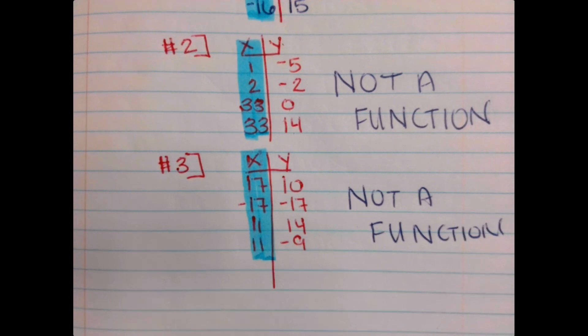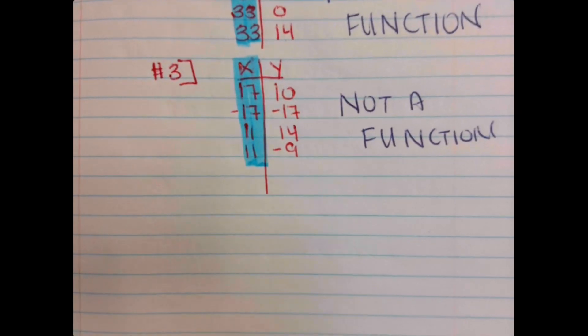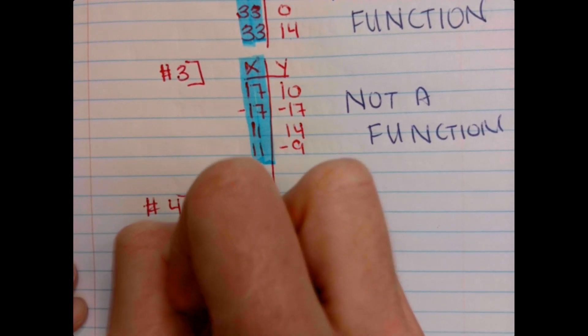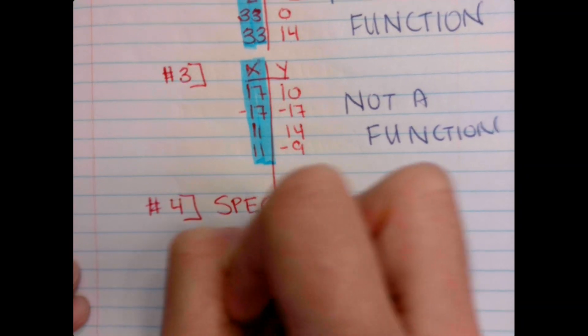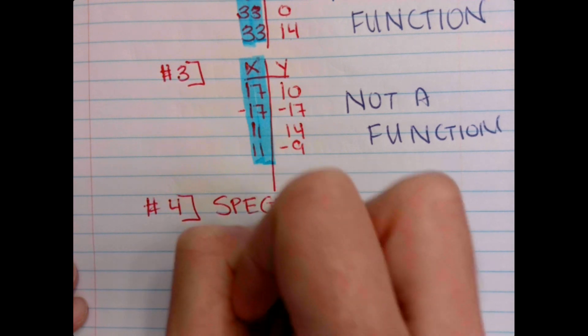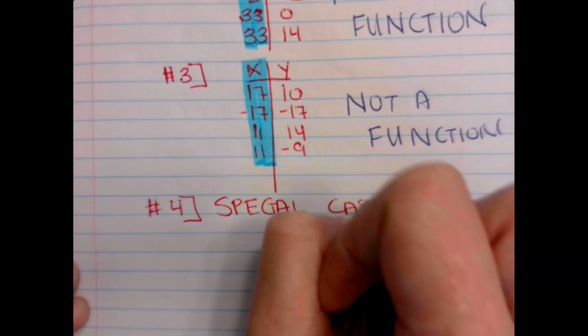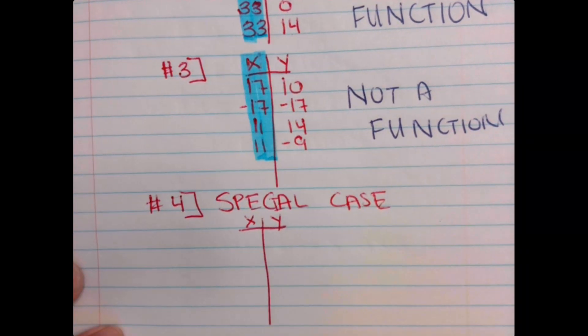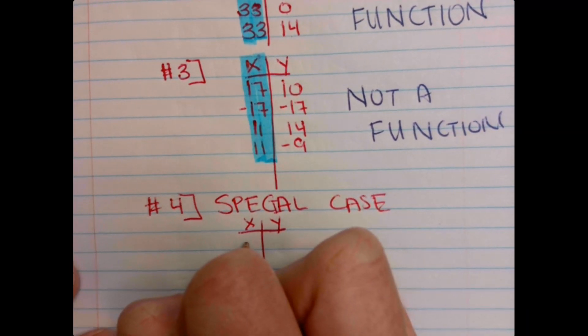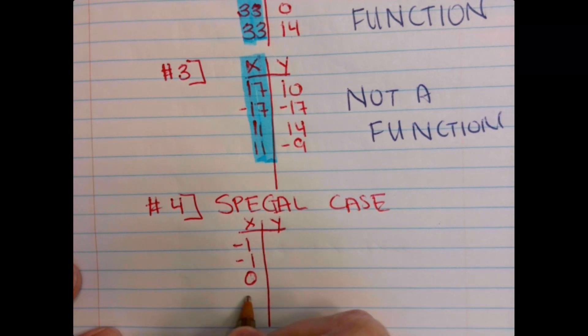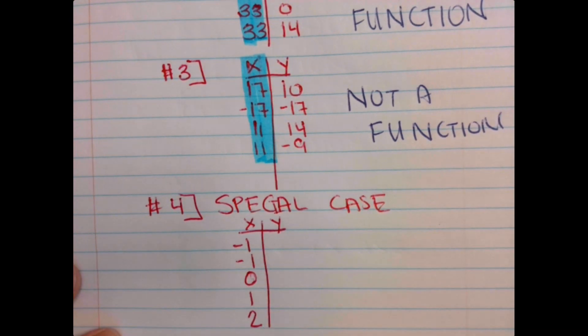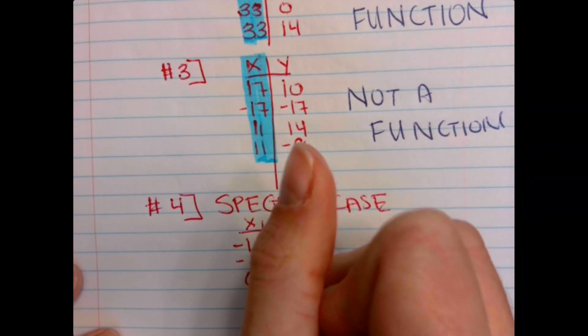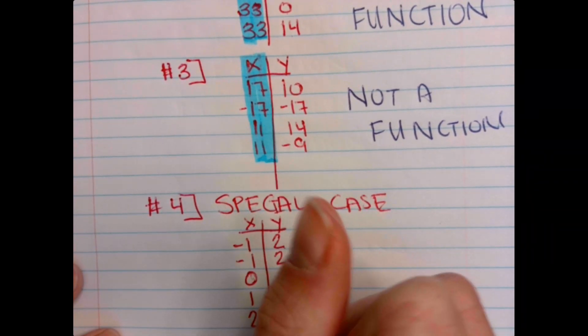We are going to do one special case. So do your x, y. On the left, we are going to do negative 1, negative 1, 0, 1, 2. On the right, we are going to do 2, 2, 4, 6, and 6.